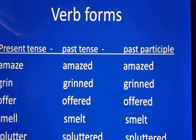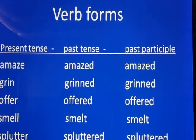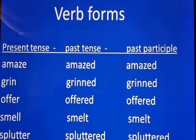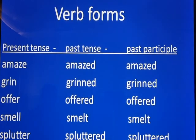Now let's see the verb forms — present tense, past tense, and past participle. Amaze — amazed — amazed. Grin — grinned — grinned. Offer — offered — offered. Smell — smelt — smelt. Splutter — spluttered — spluttered.